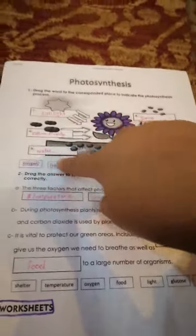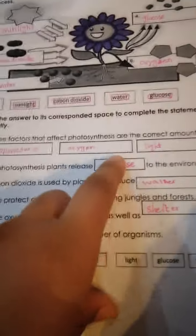Then we have water in the soil. That's all for the diagram. Now let's move to the fill-in-the-blank section. We have three factors that affect photosynthesis.